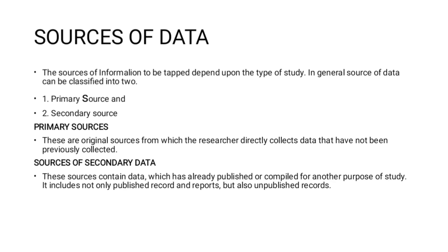If you are a researcher, you collect the data directly — it is not published. For example, if you are a researcher with 500 respondents and you collect the data yourself, that is a primary source. If you want to publish that data, it becomes a secondary source of data.